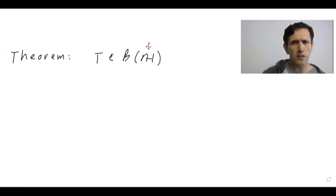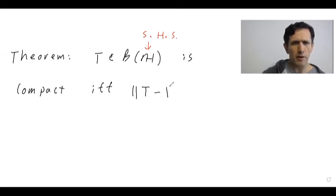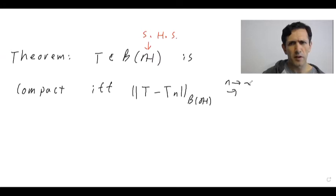So let's say H is a separable Hilbert space. T is compact if and only if in the operator norm we can approximate T by finite rank operators.